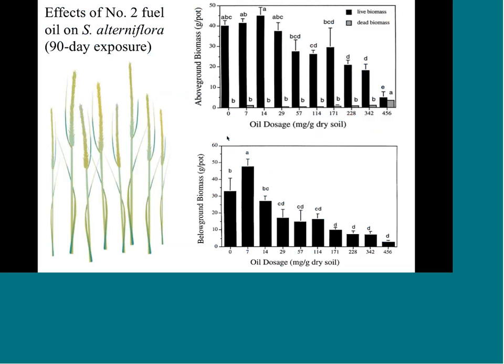Laboratory studies — where researchers 'torture plants' — by Ed, Irv Mendelsohn, and others in Louisiana show a nice dose-response curve between oil dose to the sediments and plant mortality. The milligrams per gram dry soil concentrations in these experiments are very high — up to 7,000 parts per million. The top graph shows above-ground biomass and the bottom shows below-ground biomass: the more oil in the soils, the more plants you kill. This relationship is clear with number two fuel oils but less so with other oil types.